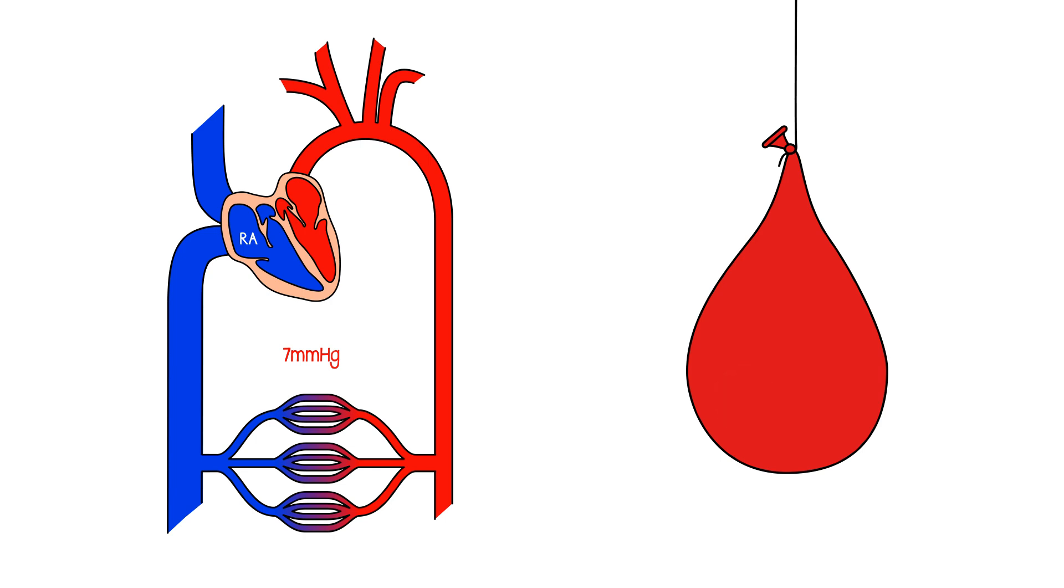And because it's a little bit overfilled, it stretches the walls, the walls push back on the blood, and we have a little bit of pressure everywhere in the circulation. That's 7 millimeters of mercury. And that's referred to as the mean systemic pressure, or MSP.